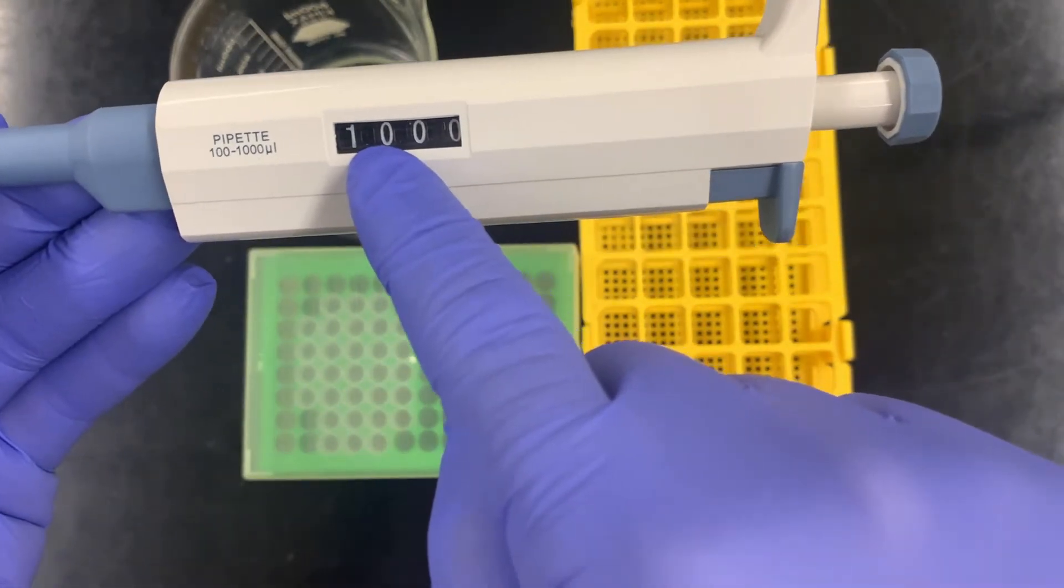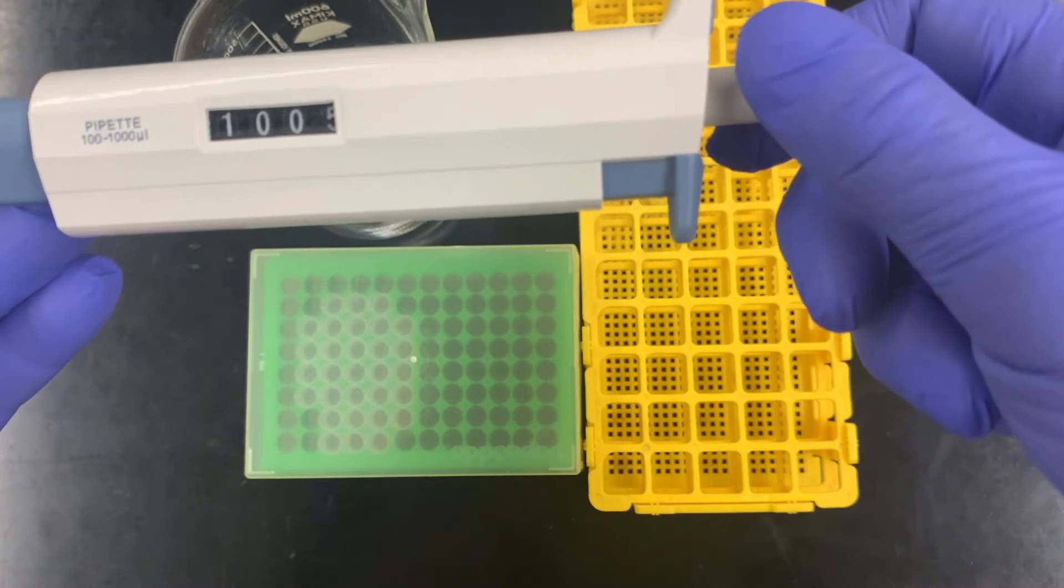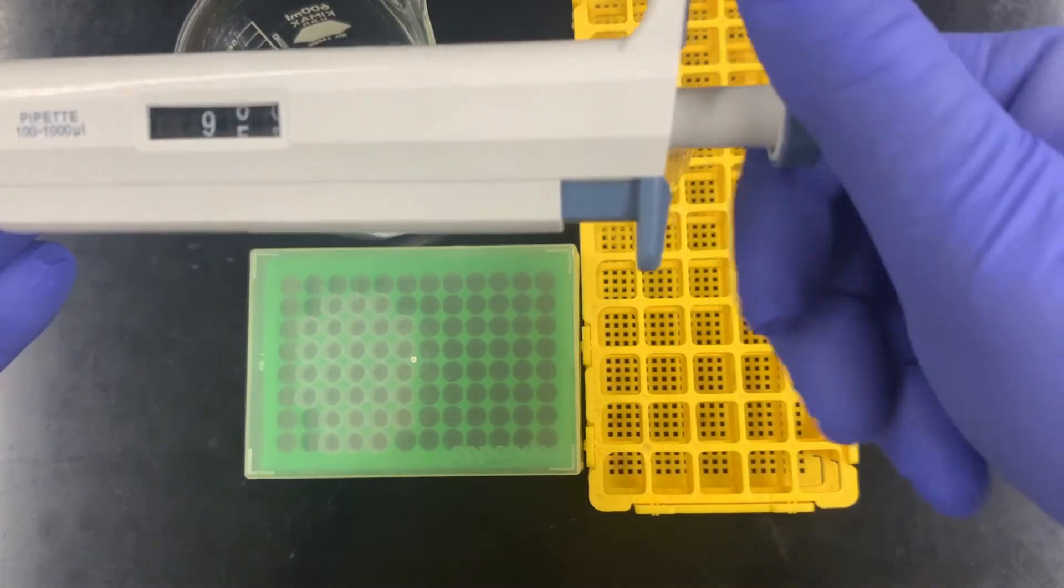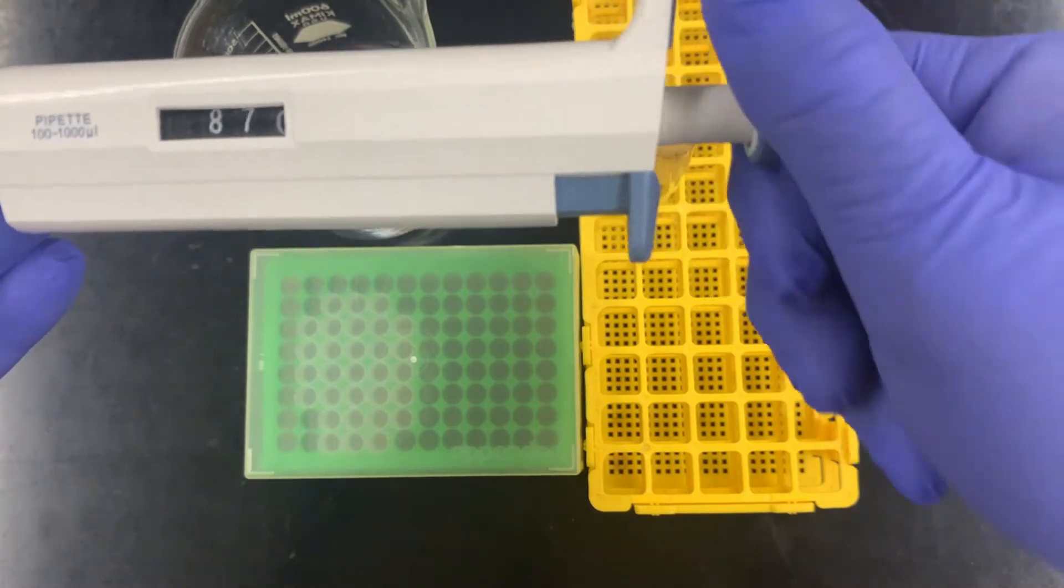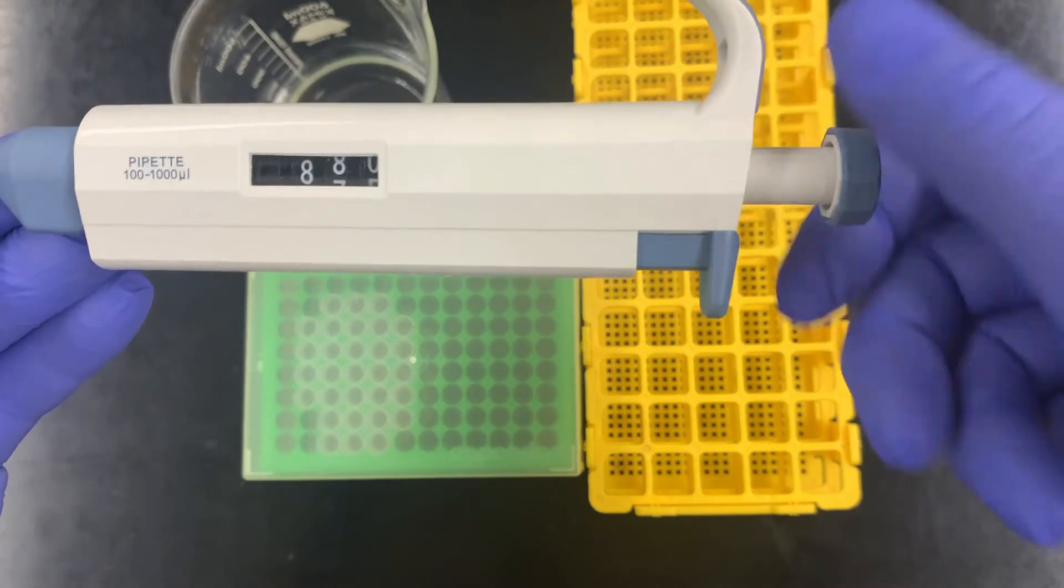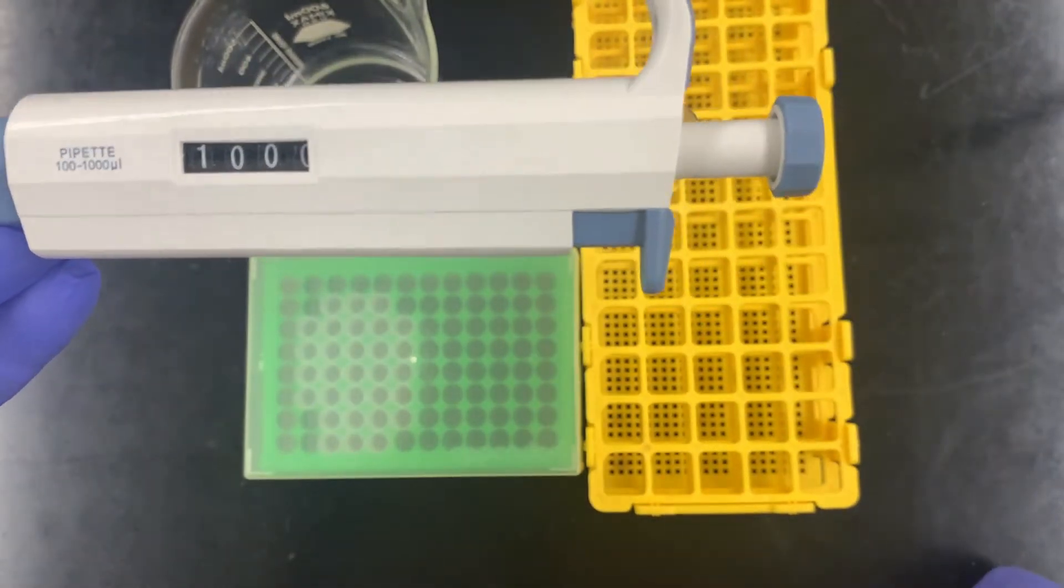To change the volume, simply turn the dial. Just be careful, don't turn it up too far, otherwise you can damage the mechanism. Simply turn this, and it allows you to adjust. You can roll it down to 100, or in this case we're going to stay at 1,000 microliters or 1 milliliter.